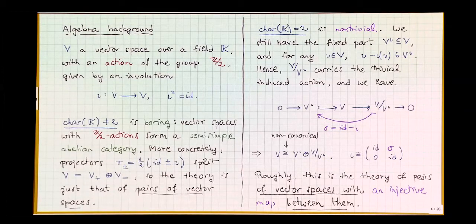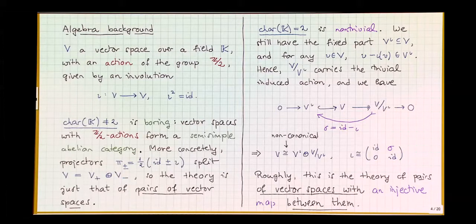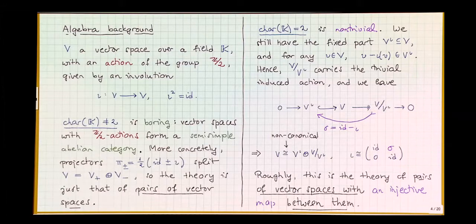So you have a subspace where the action is trivial, a quotient where the action is also trivial. If you write V as a direct sum of these two parts — which you can, but not canonically — the action looks like a matrix that squares to the identity, so it's an involution. Roughly speaking, the theory of Z2 actions on vector spaces over characteristic two is like the theory of pairs of vector spaces together with an injective map from one to the other. It's not quite trivial, and you can attach invariants more canonically — this is typically called group cohomology.